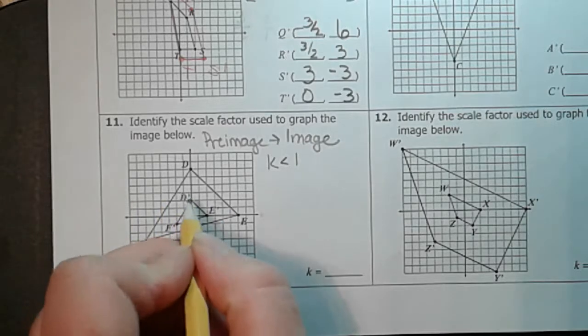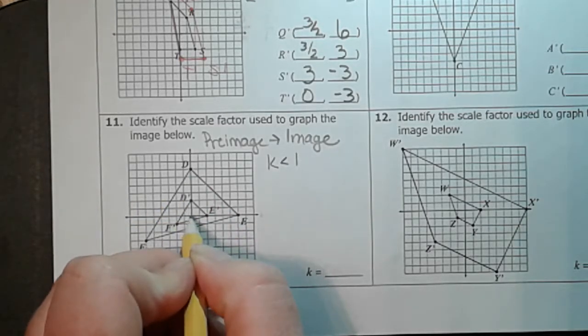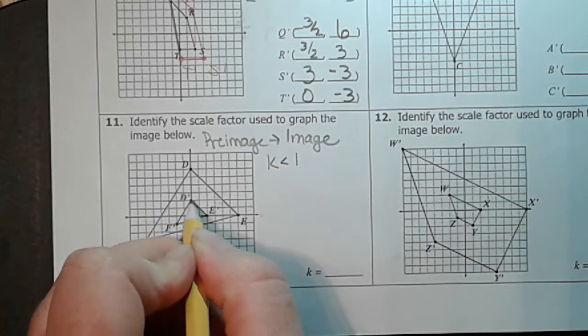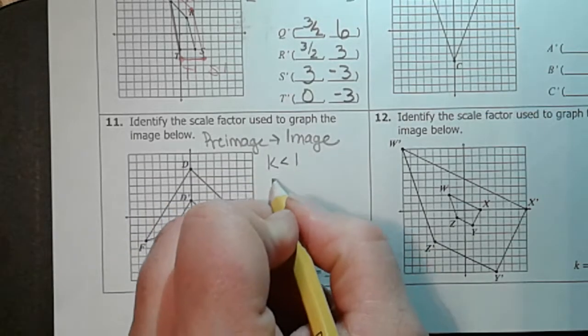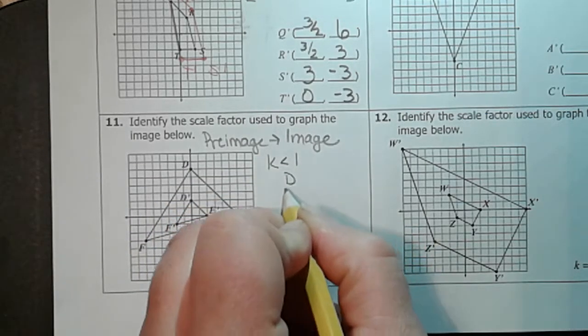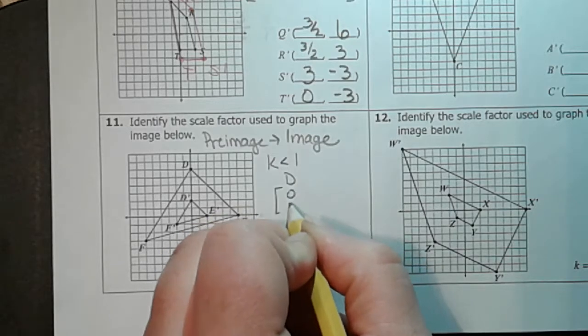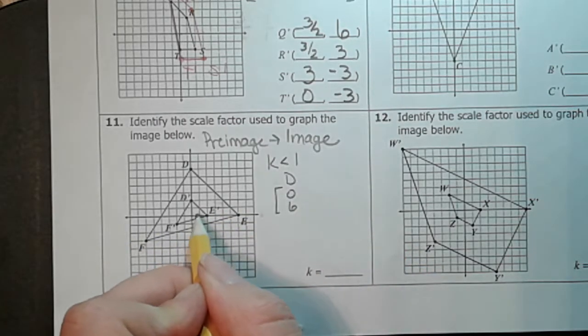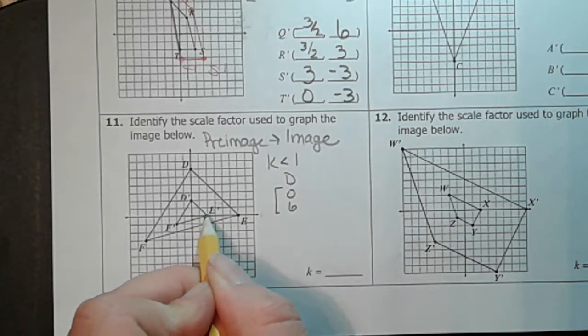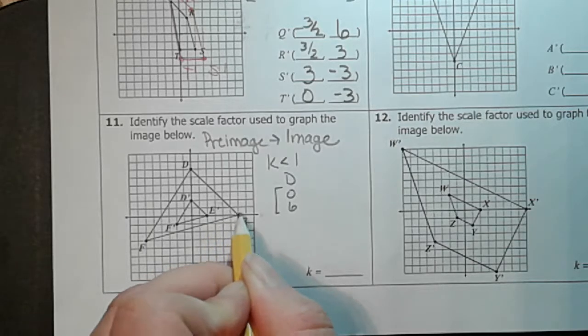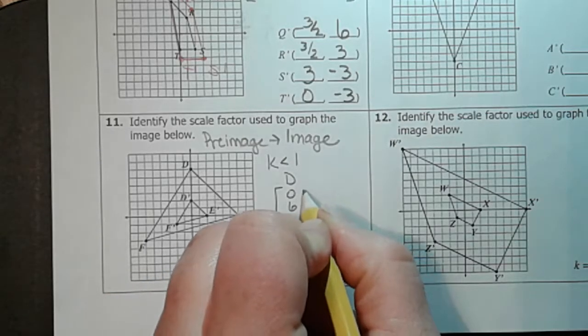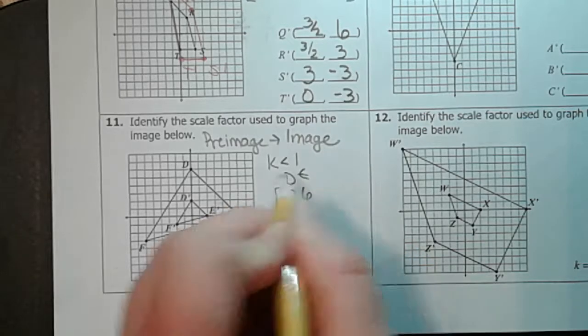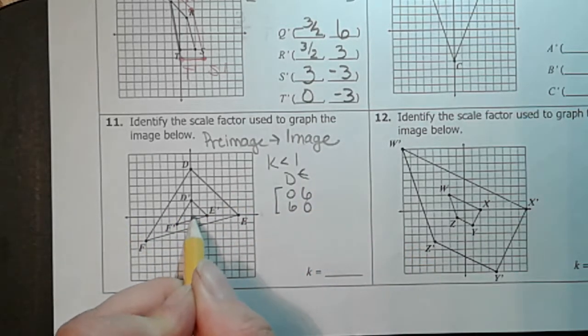Well, let's figure out what are the coordinates of D. Let's see, it's at zero, one, two, three, four, five, six. So D is at zero, six. E, one, two, three, four, five, six. That's at six, zero.